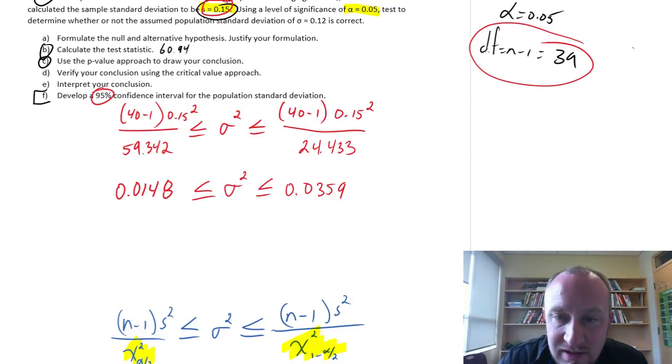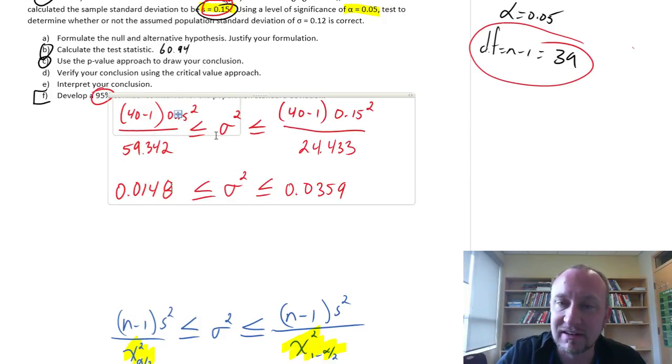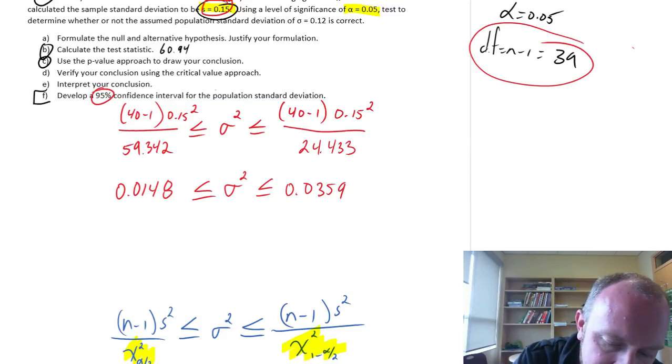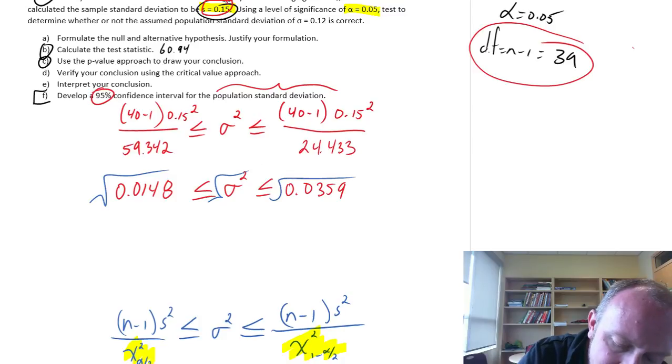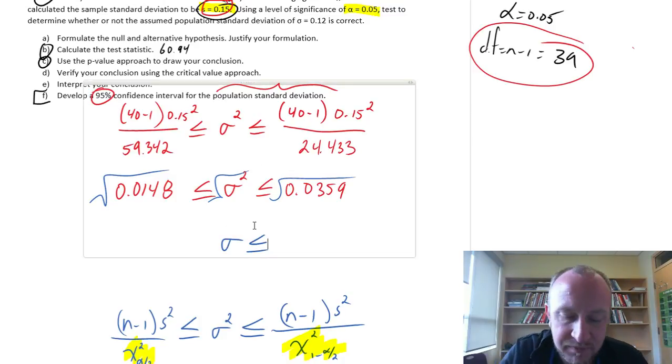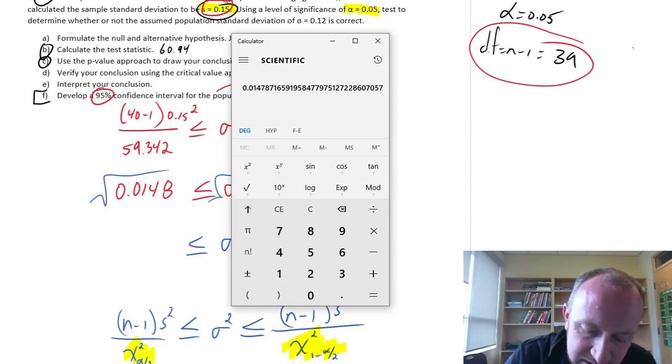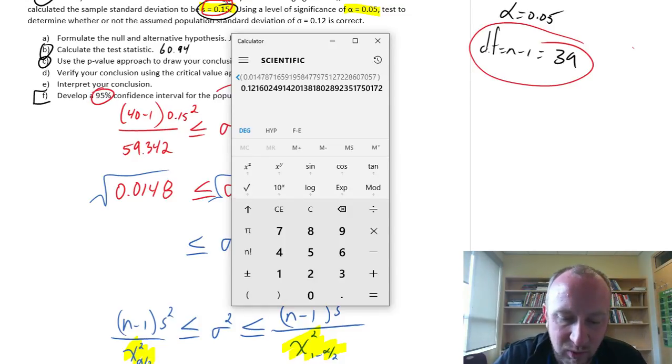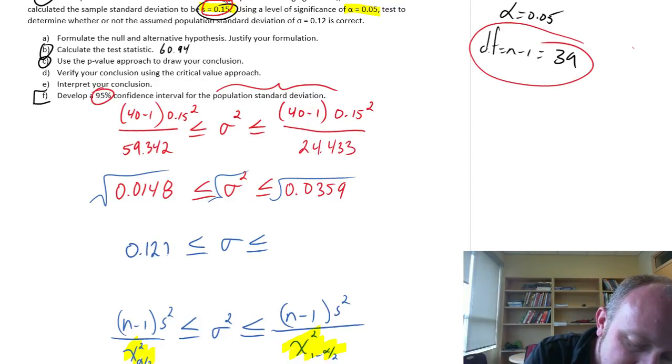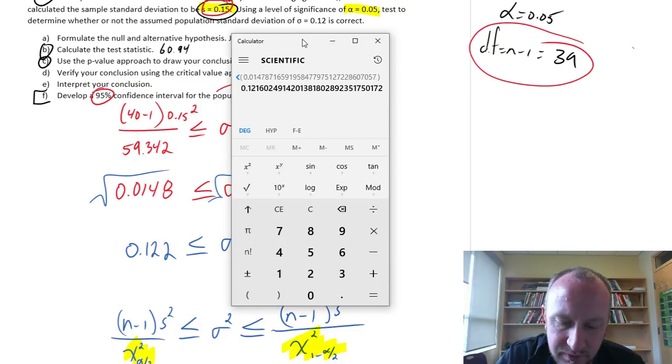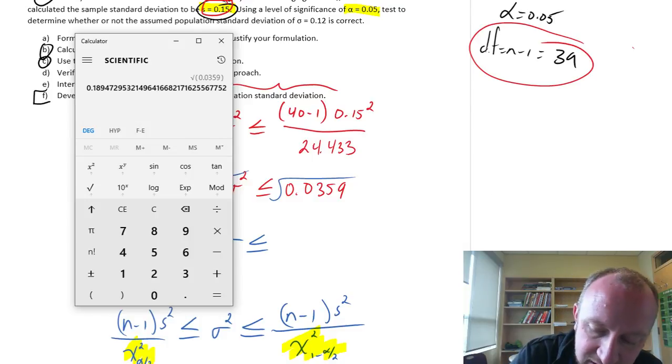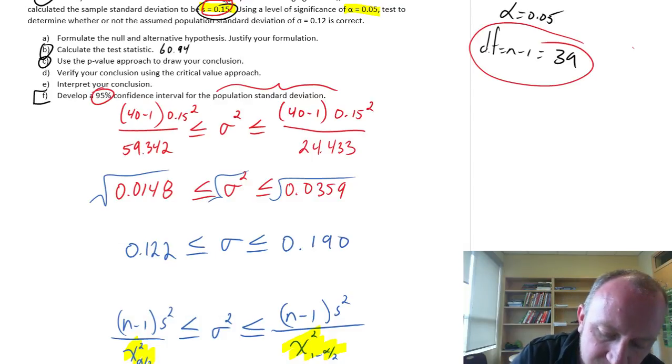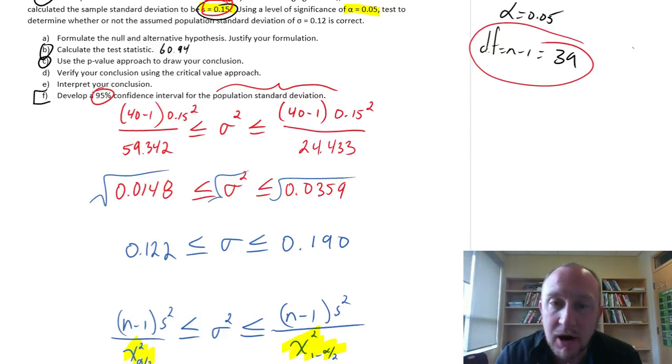There we have a 95% confidence interval for the variance of this distribution. Of course, if we look at the problem, it's actually asking us for the population standard deviation. In order to do that, we just have to take the square root of everything. I'll have a 95% confidence interval for the population standard deviation. Let's just take the square root. That's 0.122, and that upper value, 0.0359 square root is 0.190.